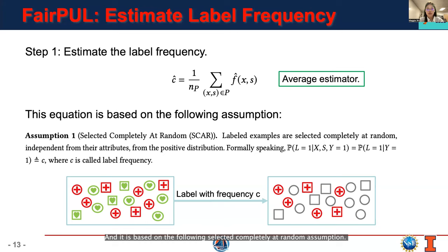And it is based on the following selected completely at random assumption, saying labeled examples are selected completely at random, independent from their attributes from the positive distribution. And C is defined here as the labeled frequency. In a real-world scenario, the ground-truth dataset may contain both positive and negative samples. We assume our observed PUL dataset is obtained by labeling positive samples with frequency C and leave all the remaining positive and negative samples as unlabeled.